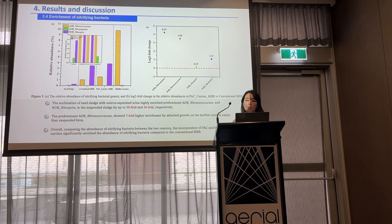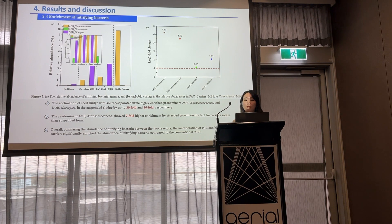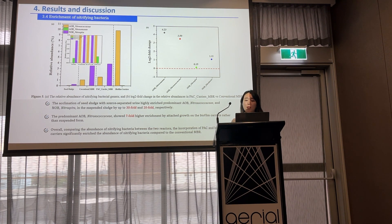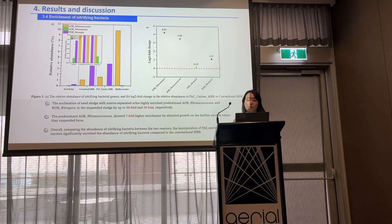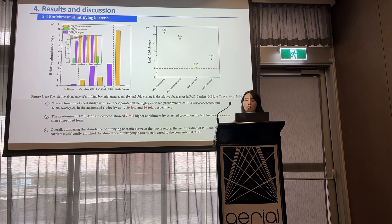We then had a closer look at the enriched nitrifying bacteria in different growing forms. The acclimation of seed sludge with source-separated urine highly enriched predominant AOB Nitrosomonas and NOB Nitrospira in the suspended sludge by up to 30-fold and 20-fold respectively. The predominant AOB Nitrosomonas showed 7-fold higher enrichment in its attached growth on the biofilm carriers rather than suspended ones. Overall, comparing the abundance of nitrifying bacteria between the two reactors, the incorporated MBR significantly enriched the abundance of nitrifying bacteria compared to the conventional MBR.